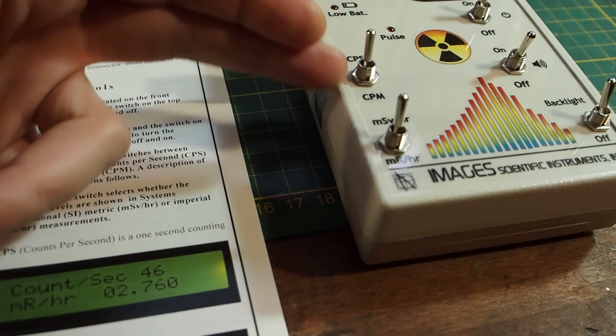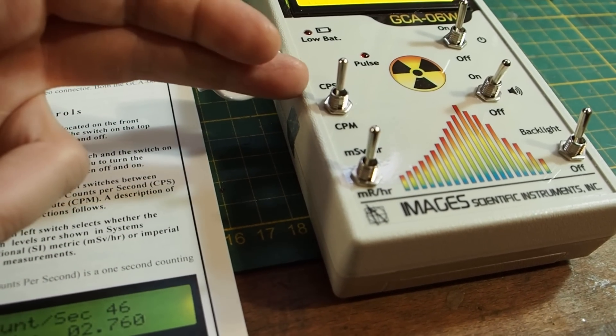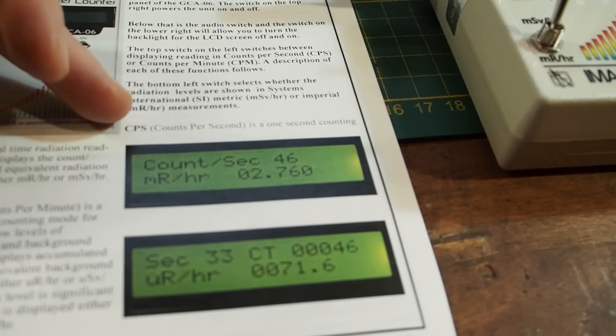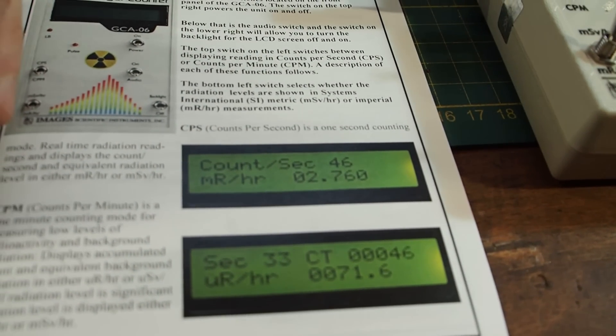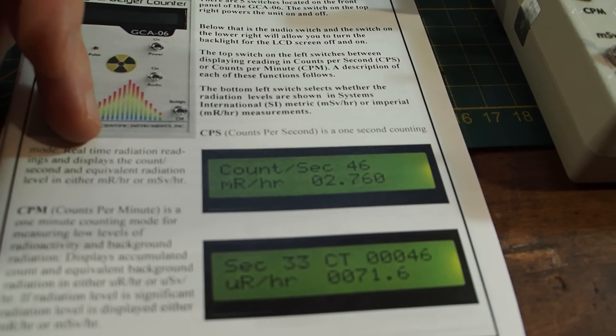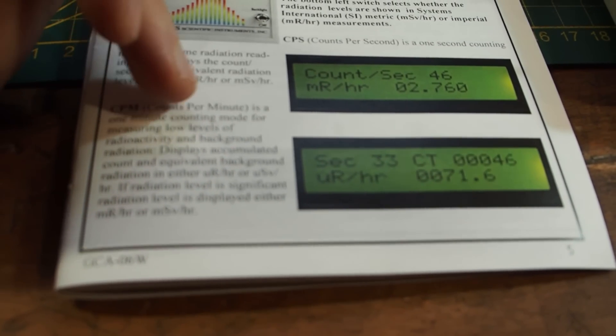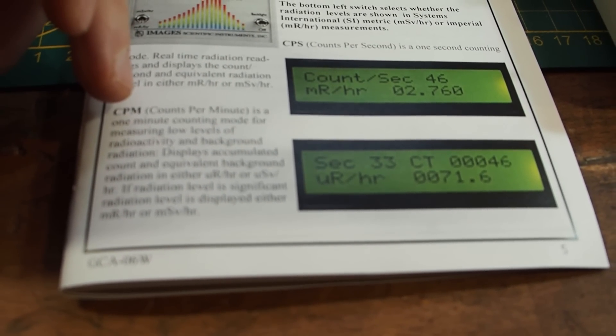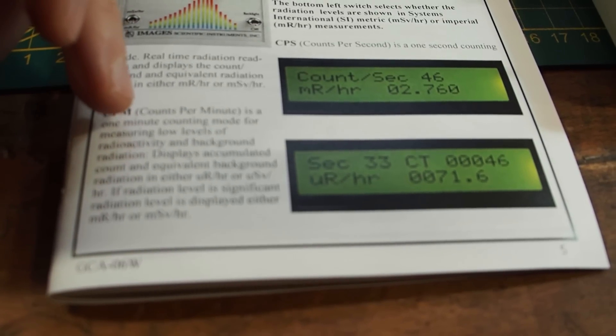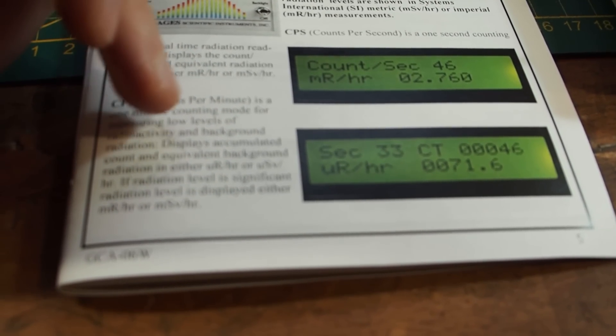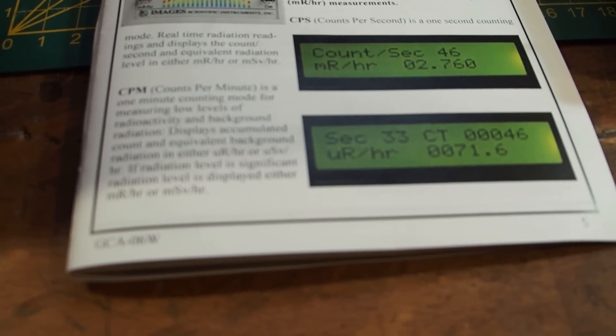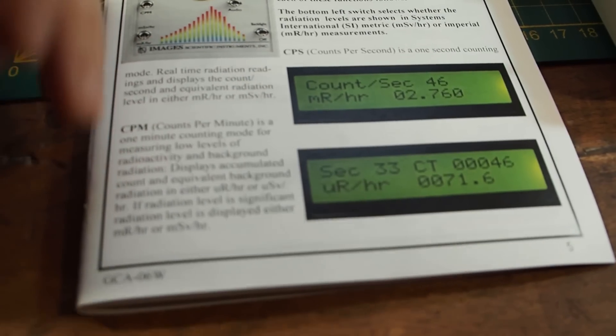So here it's telling us about the difference between when you should choose CPS and CPM. So CPS is counts per second and it's going to give you real-time radiation readings and CPM counts per minute is a one-minute counting mode for measuring low levels of radioactivity and background radiation. So that's pretty cool that you can switch between the two modes.